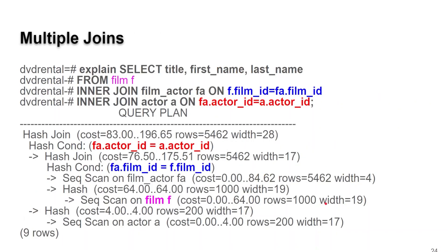For multiple joins, it's just a little different. Here we have a three-table query: SELECT from film F, INNER JOIN on film_actor, and then INNER JOIN on actor. In this case, we're going to have a hash join. The condition for the join is shown in red — remember, hash joins require an equi-join, i.e., an equal sign between the two columns. That gets combined with hash condition stuff shown in blue: film_id equals film_id. And that, in turn, is another hash join with what we get from film.